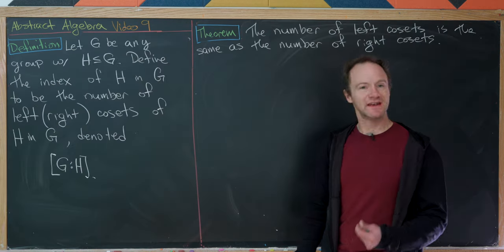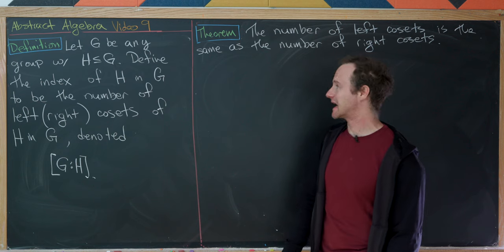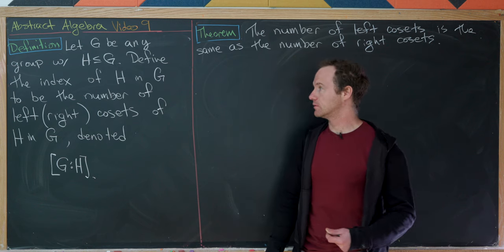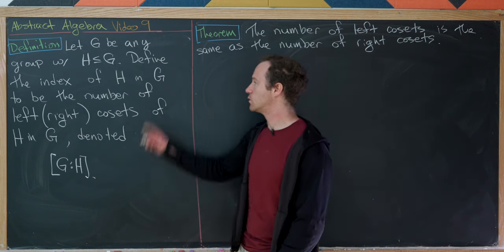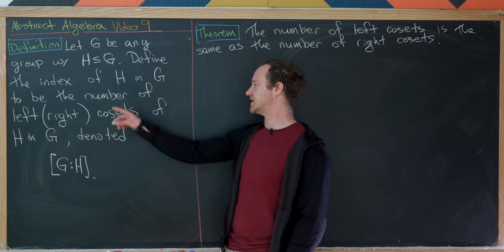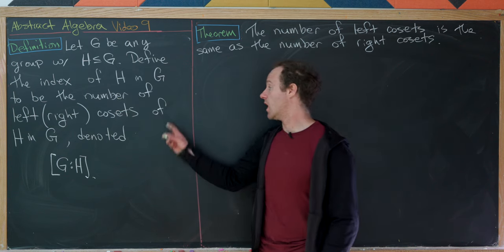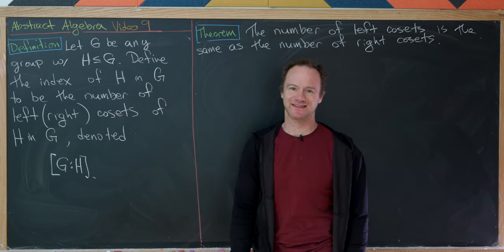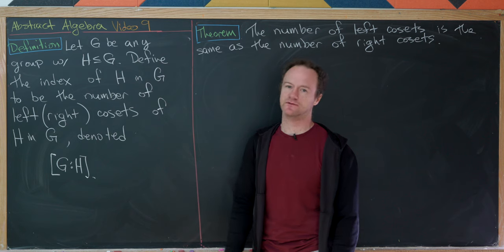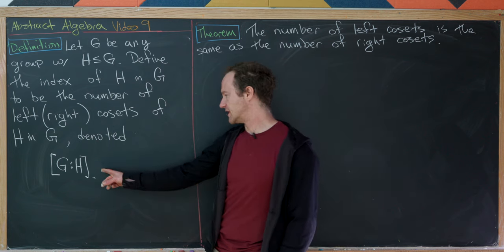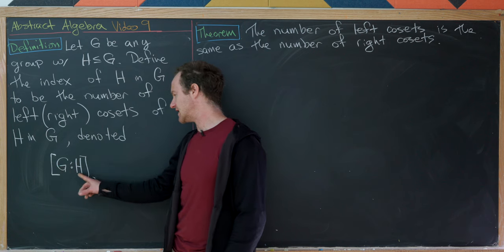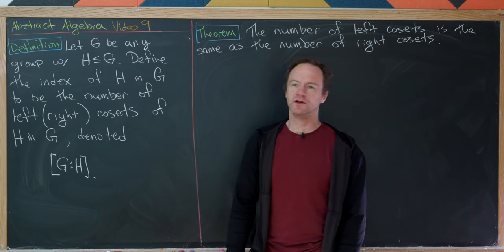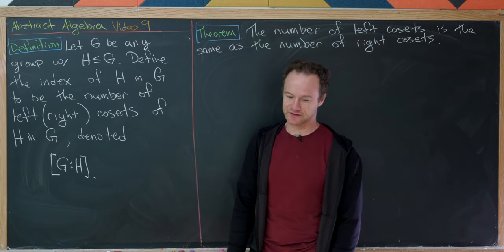Now let's look at the notion of the index of a subgroup. Let G be any group and H a subgroup of G. We define the index of H in G to be the number of left cosets of H in G — or equivalently the number of right cosets. We're about to prove those are the same number, making this well defined. The notation is [G:H].